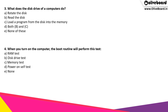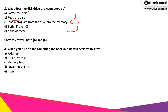What does the disk drive of a computer do? The disk drive has a particular function, and the correct answer is option 4, which is both B and C. That is, the disk drive reads the content of the disk and it also loads the program from the disk to the memory of the computer.